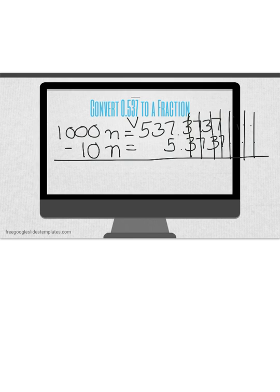So if I look, 537 minus 5 is 532 on the right side of the equal. And 1,000n minus 10n is 990n on the left side.